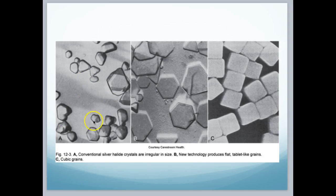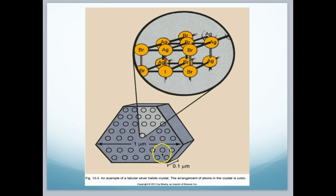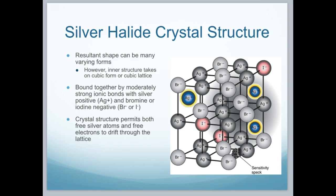Here are some pictures of some crystals. These are the conventional silver halide crystals — we can see where they were irregular in shape. New technologies make them more flat, broad, and table-like grains, and there are also cubic grains. Here's a snapshot of the gelatin suspending these crystals, with the tubular silver halide crystals visible in the lattice structure. The silver halide crystal structure's resultant shape can be in many varying forms, but the inner structure takes on a cubic form or cubic lattice. They're bound together by moderately strong ionic bonds, with silver being positive and bromide being negative. The crystal structure permits both free silver atoms and free electrons to drift through the lattice.